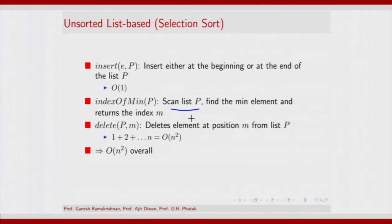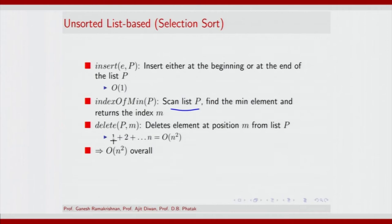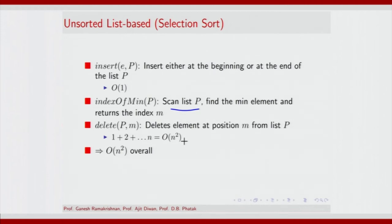Delete requires just deleting that specific element at position m. In this process you will need to shift back elements and make the list compact. The compaction time depends on the size of the list — initially the compaction time is O(1), then O(2), and so on. So at every iteration scanning the list requires O(n) where n is the size, and compaction in the worst case can be O(n) when you find the element at the other end of the list.